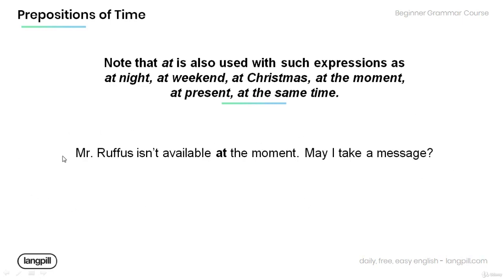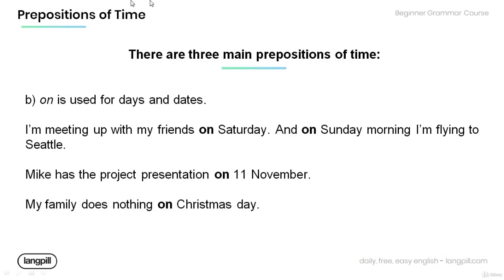Have a look at the example below: Mr. Rufus isn't available at the moment. May I take a message? Note that in the sentence, the preposition of time 'at' is used with the expression 'the moment' — 'at the moment.'